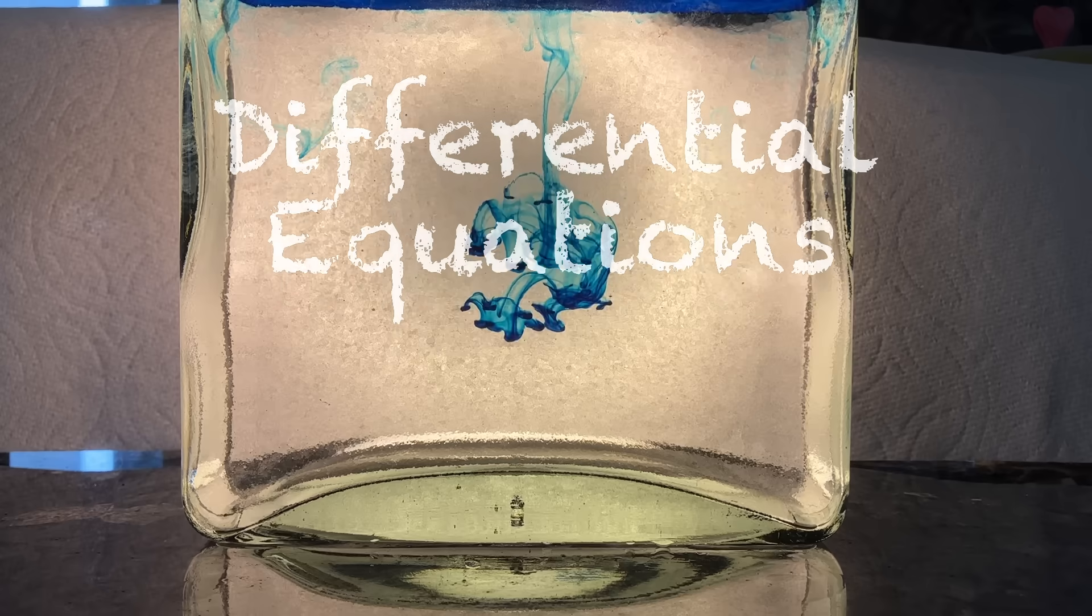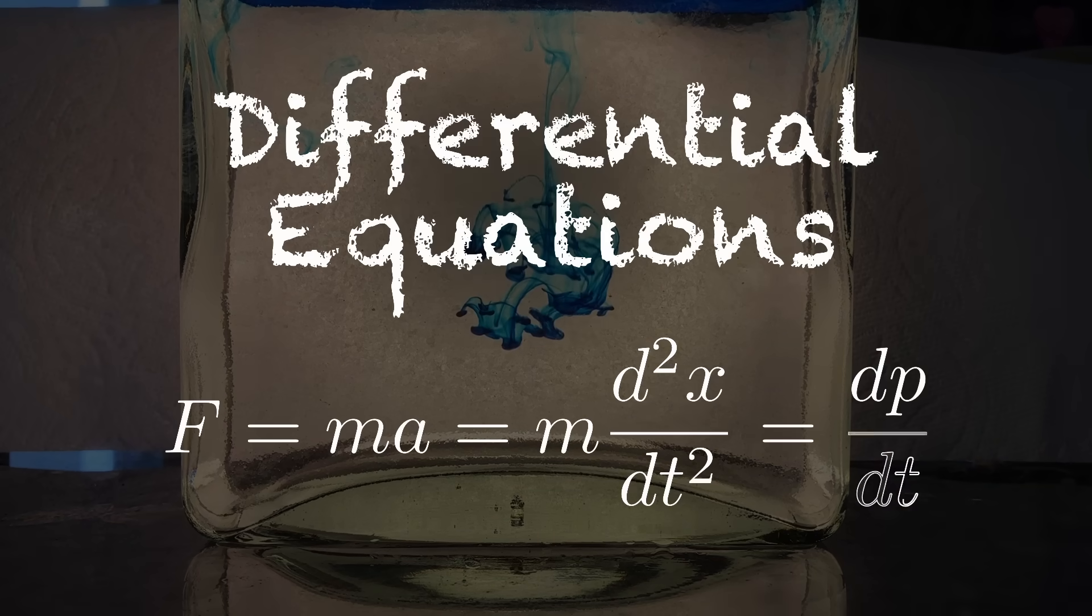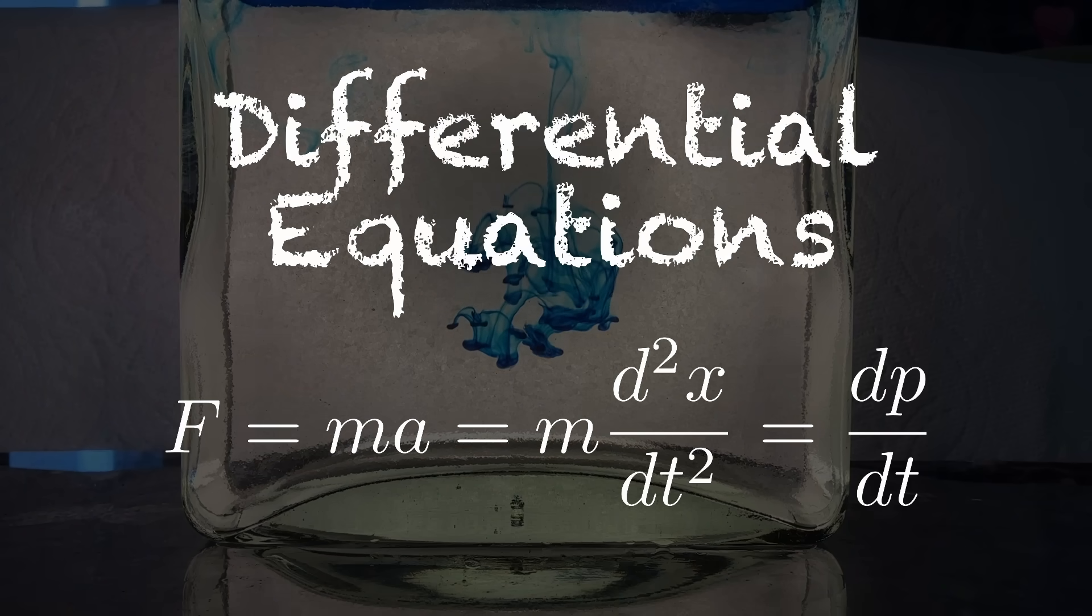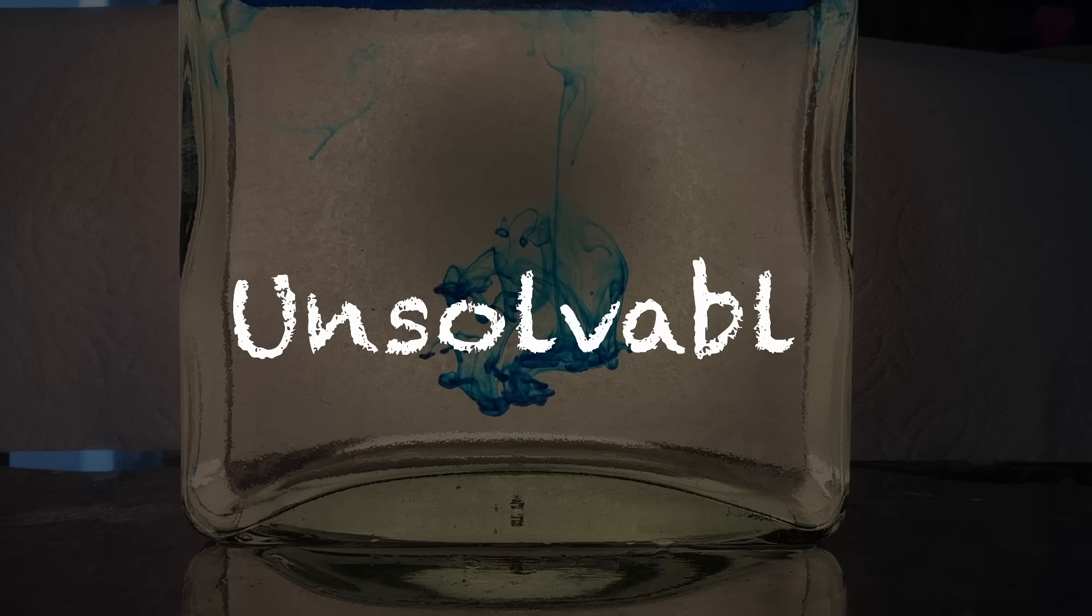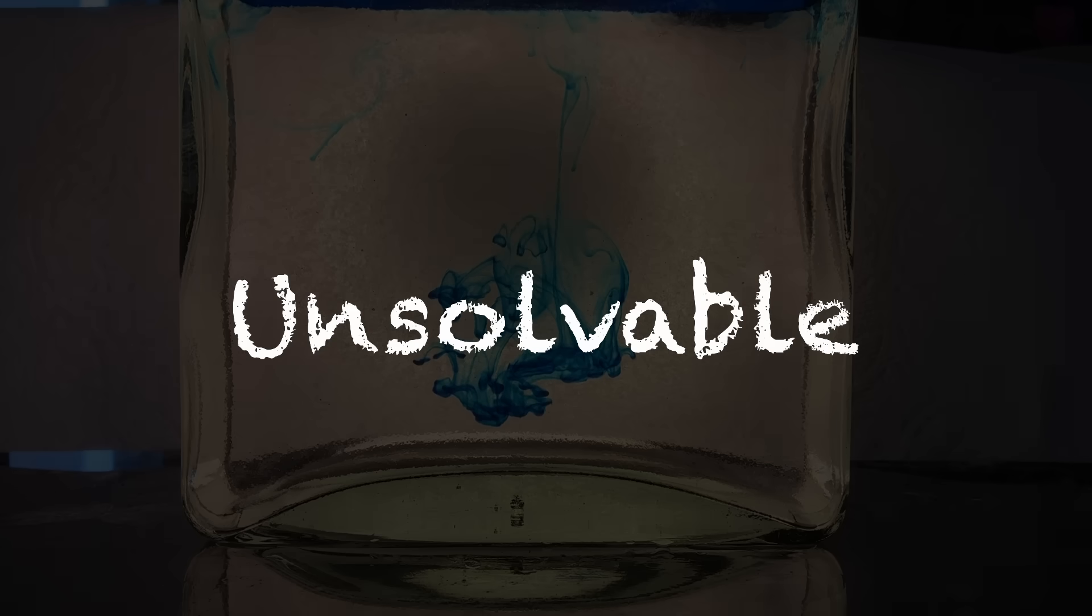Even Newton's second law, F equals ma, is a differential equation, since acceleration is the second derivative of position. It's a really grand and beautiful idea that we can distill so much of the world around us into a relatively simple mathematical concept. There's just one not-so-tiny problem: most differential equations are utterly unsolvable. All of nature's secrets, they're completely locked away behind their mathematical complexity. Or are they?